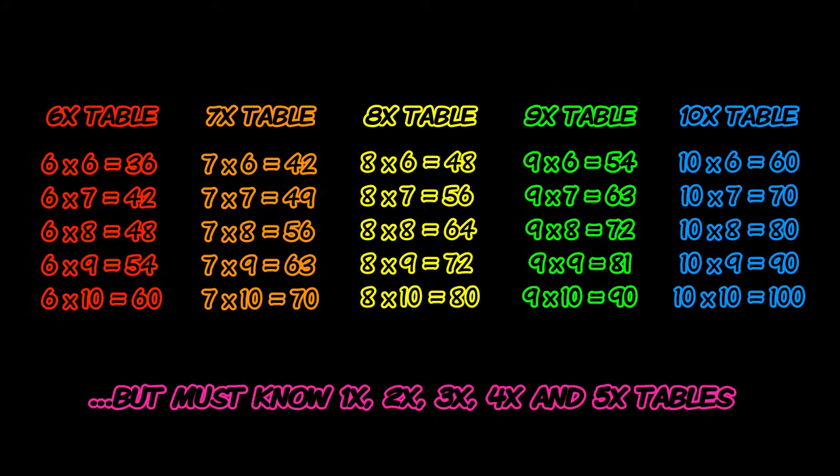This only works for the upper 6, 7, 8, 9 and 10 times tables. So if you wanted to do 5 times 6 or 4 times 7 or 3 times 9, this won't work for that. This only works for everything above 6 times 6. So we're starting at 6 times 6 and we're going all the way up to 10 times 10.